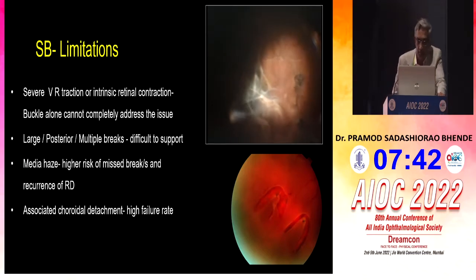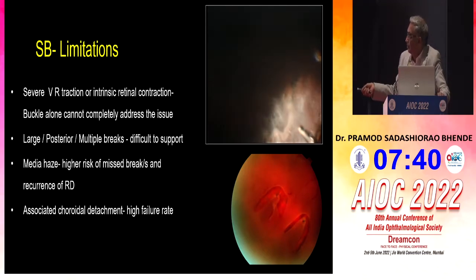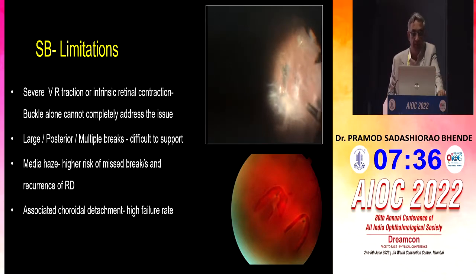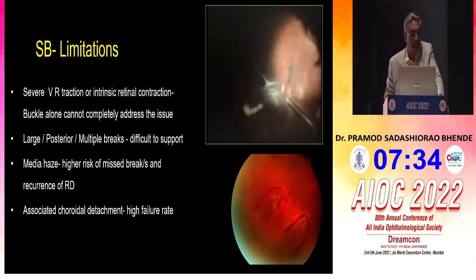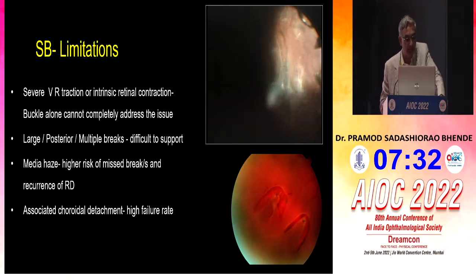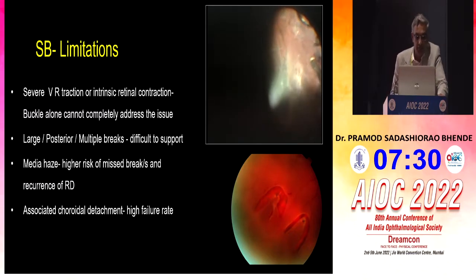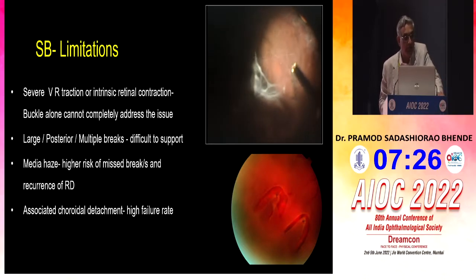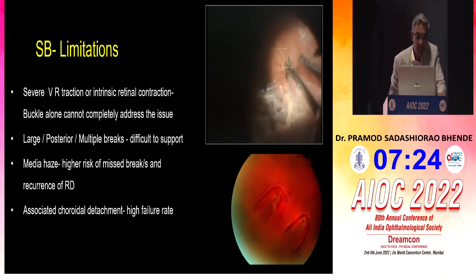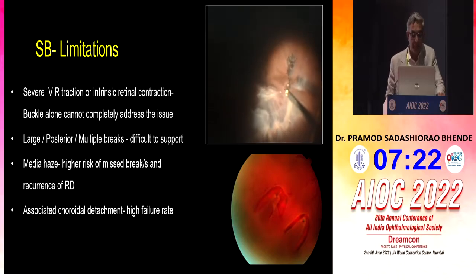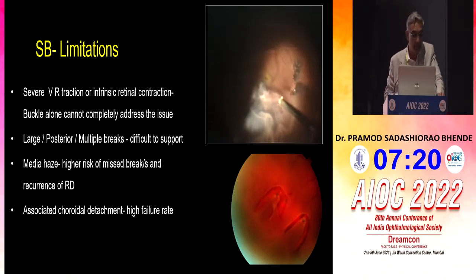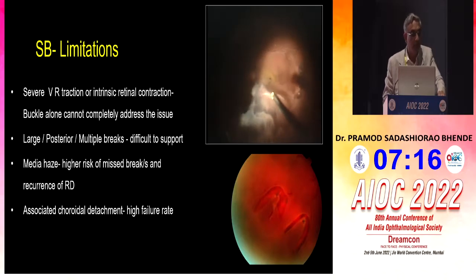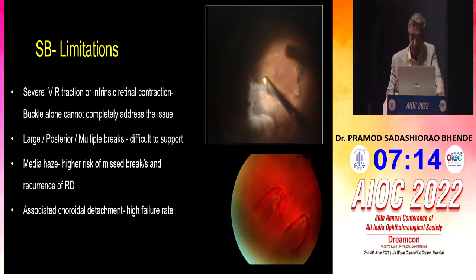Looking at the limitations of scleral buckling: in cases of severe vitreoretinal traction or intrinsic retinal contraction, buckling alone cannot completely address the issue. With large posterior multiple breaks, it is difficult to support. Media haze leads to a higher risk of missed breaks and obviously a high risk of recurrent detachment. If associated with PVR detachment, we know that is a high risk of failure.